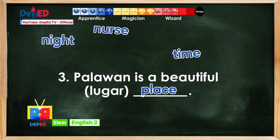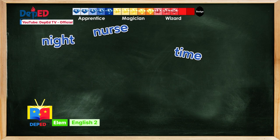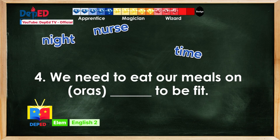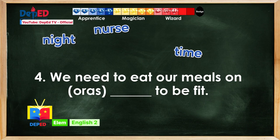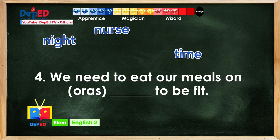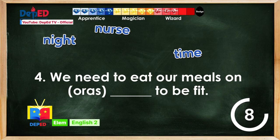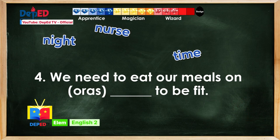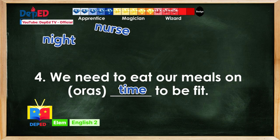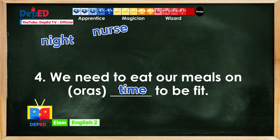Fourth sentence: We need to eat our meals on blank to be fit. What is the English translation of the Filipino word oras? Time is up — what did you answer? Awesome, it is time! One gem for you, gem hunters. Repeat after me: We need to eat our meals on time to be fit.